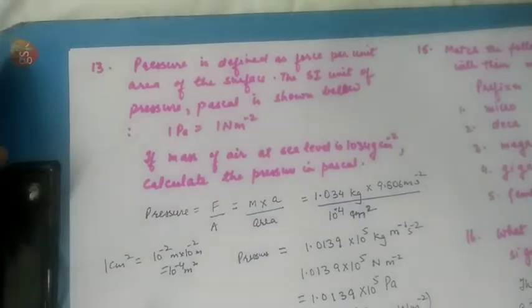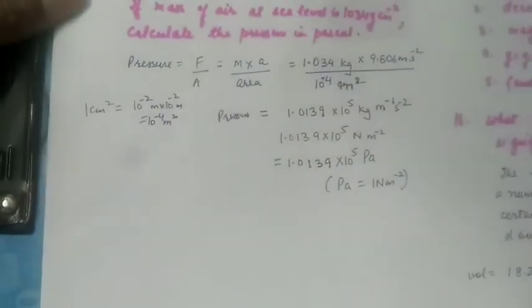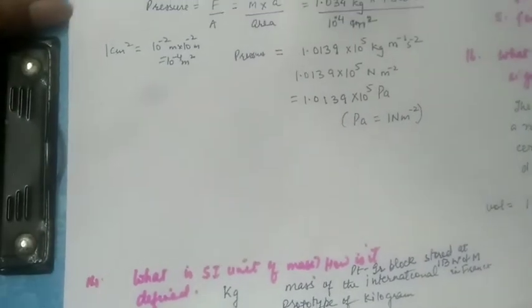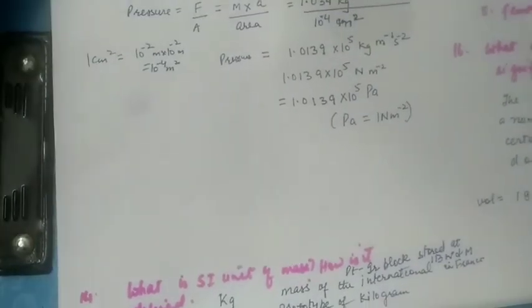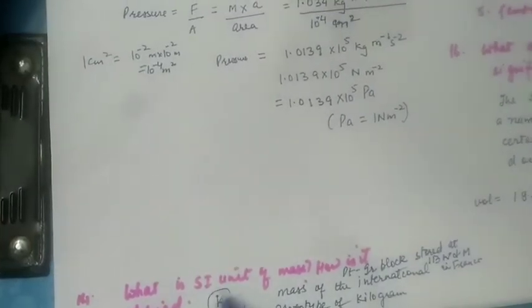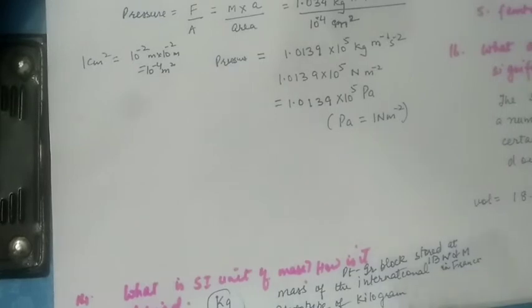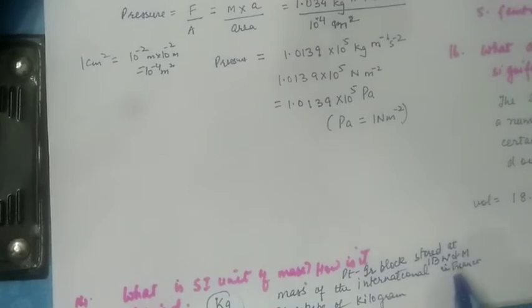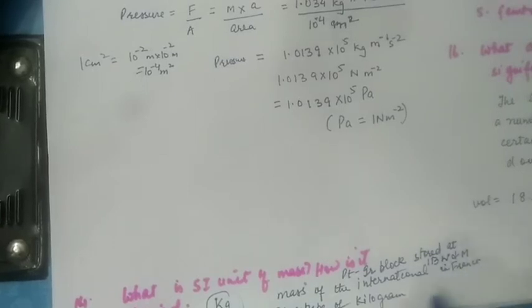Next question: what is the SI unit of mass and how is it defined? The SI unit of mass is kilogram. It is the mass of a platinum-iridium block stored at the International Bureau of Weights and Measures in France — it is the mass of the international prototype of the kilogram.